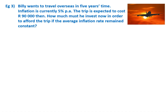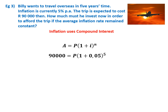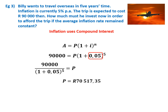The big thing you need to decide is which is your A value and which is your P value for the R90,000. Remember, inflation uses compound interest, so we use the compound interest formula. We want to know how much Billy puts into the bank right now to take out R90,000 at the end, so R90,000 is your A value. To calculate P, enter 5% as 0.05, then take R90,000 divided by everything else on the right-hand side. At the moment he needs to put approximately R70,517.35 into his bank, and in 5 years time he will have R90,000 and he can go on his trip.